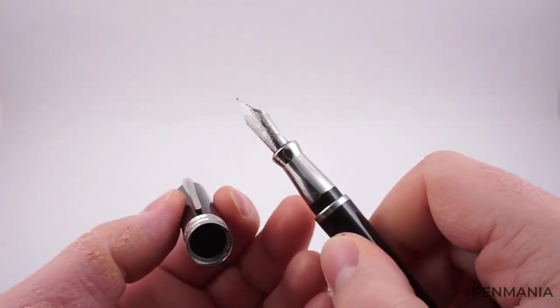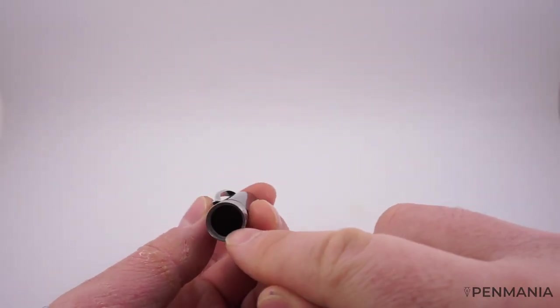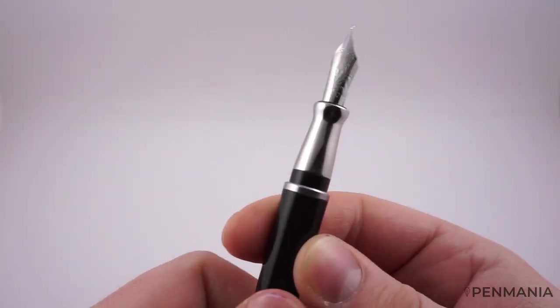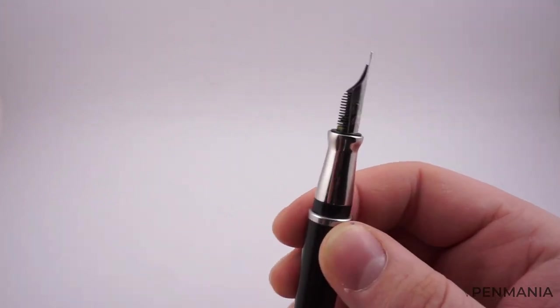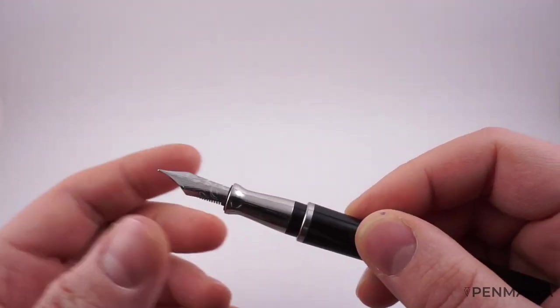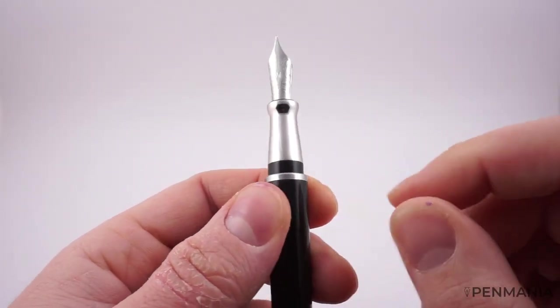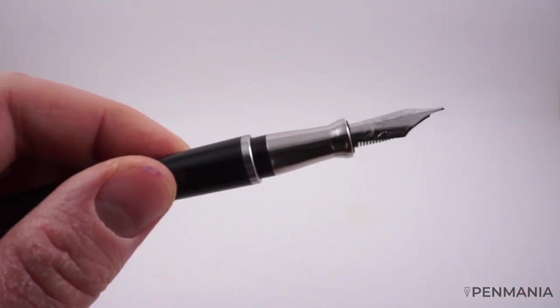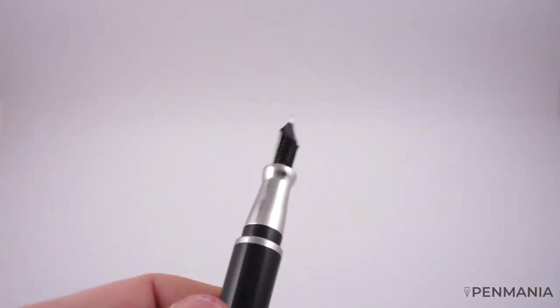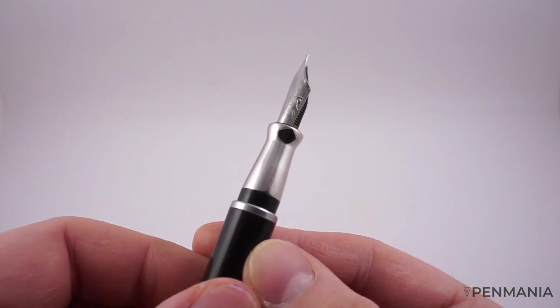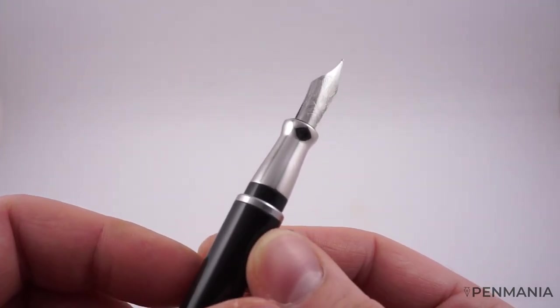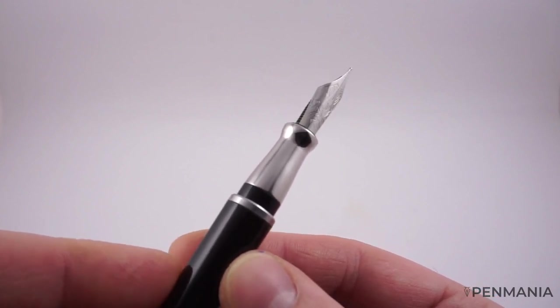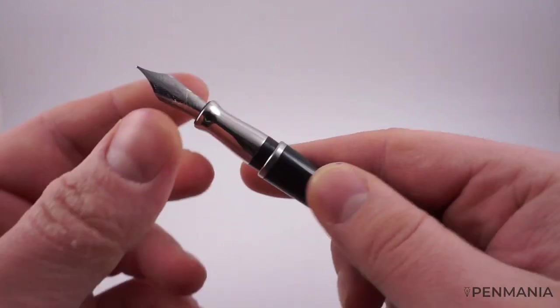When you cap and uncap the pen several times like that, hopefully you'll be able to hear, you are bound to touch the magnet to this part of the section. This is happening every time you cap or uncap the pen. Because of that, I don't know if you'll be able to see right now on the video, scratches will develop very quickly on the section, on the metal section. Big scratches.